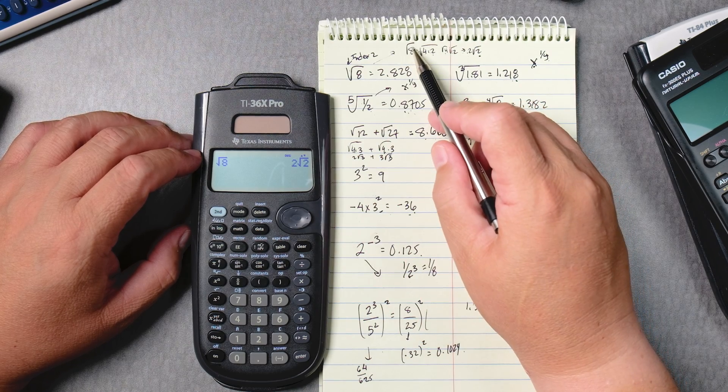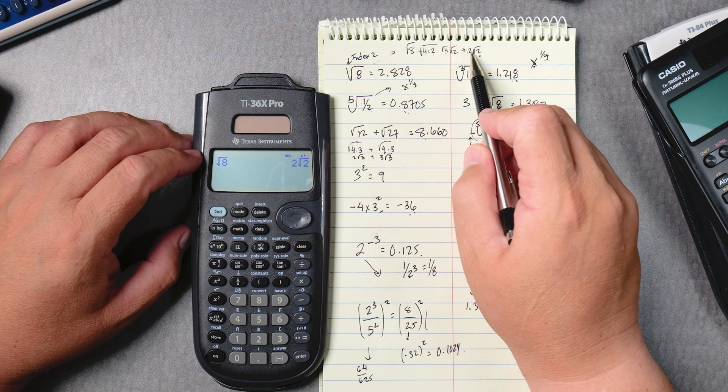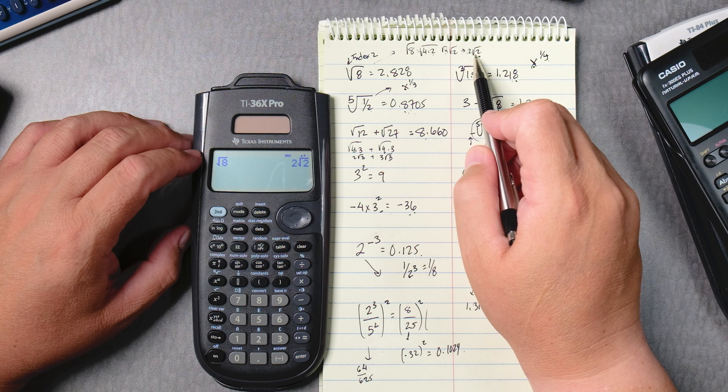How? Well, 8 can be 4 times 2, square root of 4 is 2, and then we're left with the square root of 2.